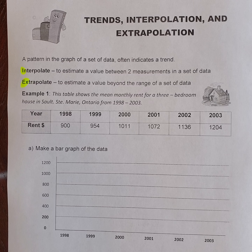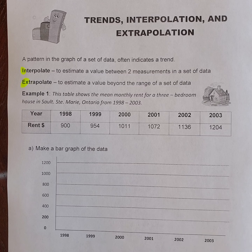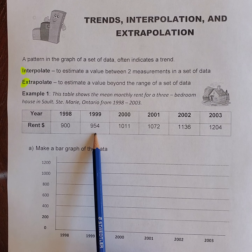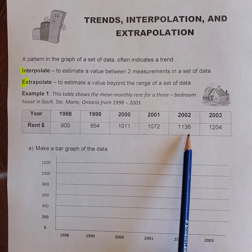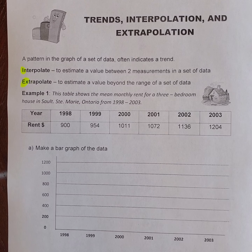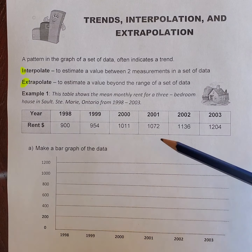The first example we're going to look at is the monthly rent for a three-bedroom house in Sault Ste. Marie, Ontario. The data set we're given is from 1998 to 2003. The rent values are: $900, then $954, $1,011, $1,072, $1,136, and $1,204. Just by looking at it you can see that as the years pass, the rent is increasing.